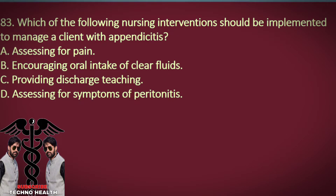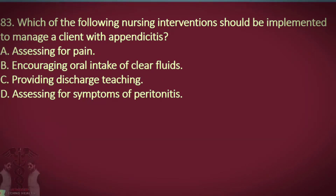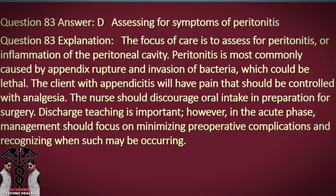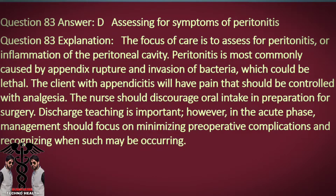Question 83. Which of the following nursing interventions should be implemented to manage a client with appendicitis? A. Assessing for pain. B. Encouraging oral intake of clear fluids. C. Providing discharge teaching. D. Assessing for symptoms of peritonitis. Answer: D. Assessing for symptoms of peritonitis. Explanation: The focus of care is to assess for peritonitis, or inflammation of the peritoneal cavity. Peritonitis is most commonly caused by appendix rupture and invasion of bacteria, which could be lethal. The client with appendicitis will have pain that should be controlled with analgesia. The nurse should discourage oral intake in preparation for surgery. Discharge teaching is important; however, in the acute phase, management should focus on minimizing preoperative complications and recognizing when such may be occurring.